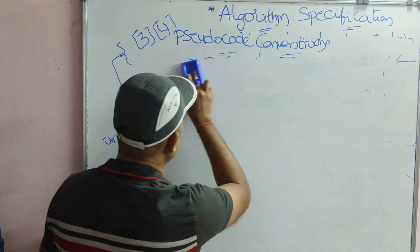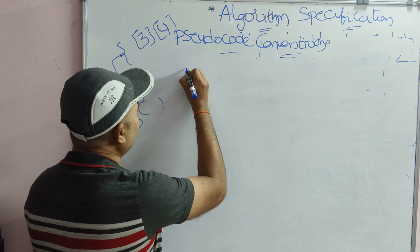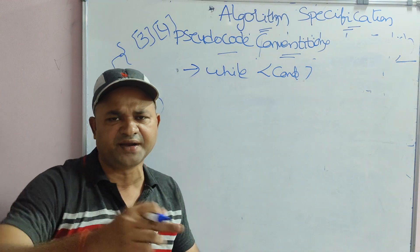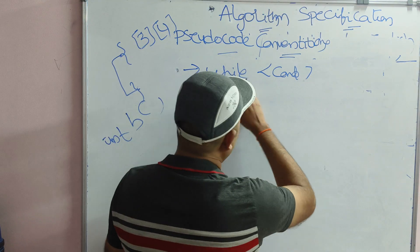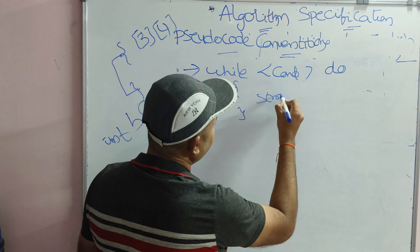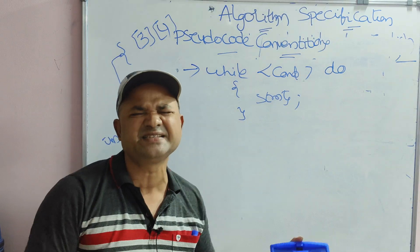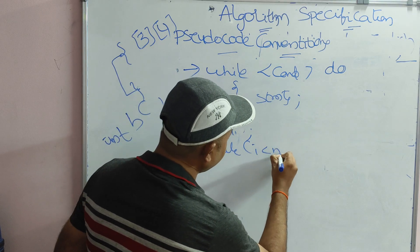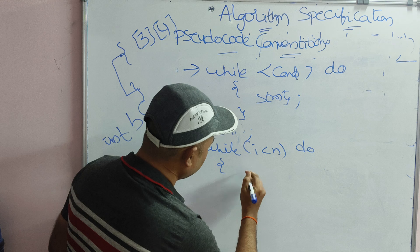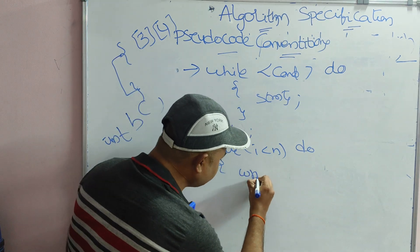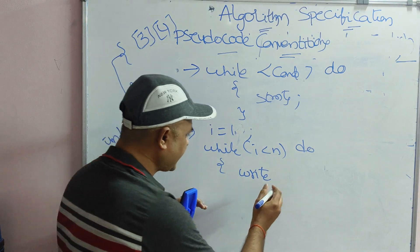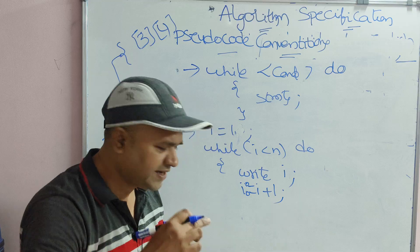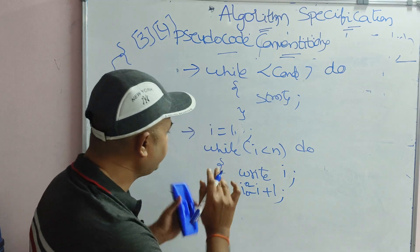Now let us see looping statements. For the while loop, the syntax is: 'while (condition) do { statements; }'. The parentheses are optional. For example: i := 1; while i < n do { write i; i := i + 1; }. For the assignment operator inside the loop, we use := or the reverse arrow.